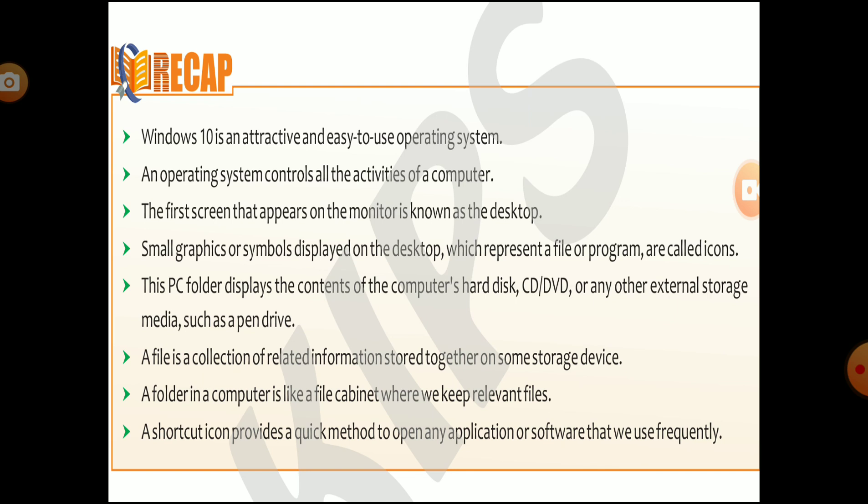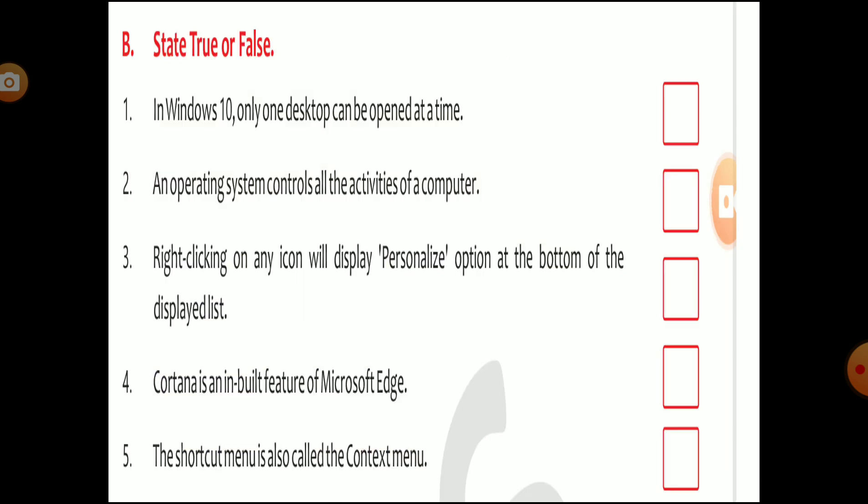Now we will see the exercises. First, true or false: In Windows 10, only one desktop can be opened at a time — this is false. An operating system controls all the activities of a computer — this is true. Right-clicking on any icon will display the personalized option at the bottom of the list — this is false, because right-clicking an icon shows the properties option, not the personalize option. The personalize option appears when you right-click on a blank desktop.